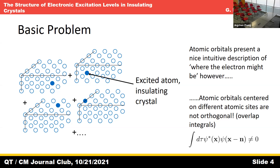We want functions that, when you start spreading the atoms out, go to the atomic functions in the limit of infinite separation. But they are different when you bring the atoms close together. Do you have any symmetry in your system — the system that Wannier is talking about? Yes, it's a crystal.